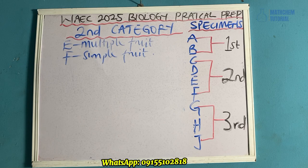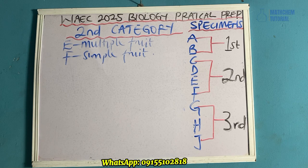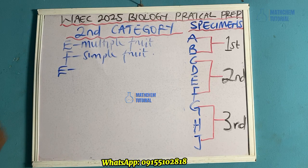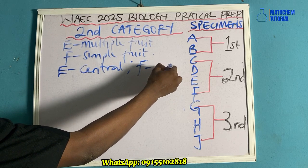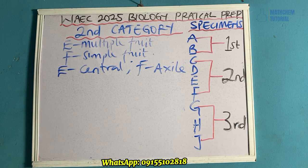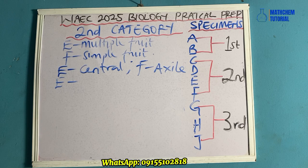Another question they can ask you is to compare the two fruits in terms of placenta arrangement, edible parts, and type of ovary. In terms of placenta arrangement: for specimen E it is central placentation, while for specimen F it is axile placentation. In terms of edible parts: for specimen E it is the fleshy receptacle.